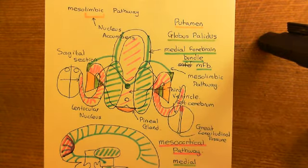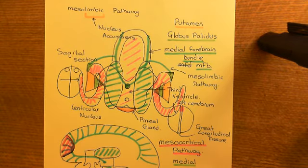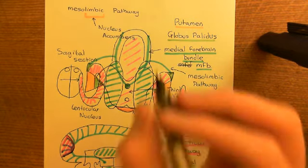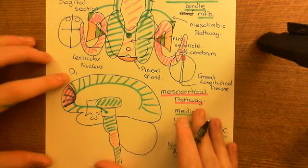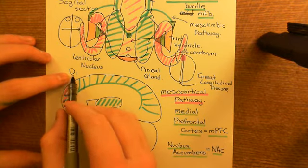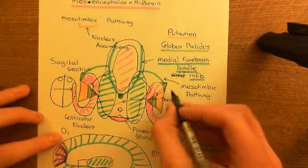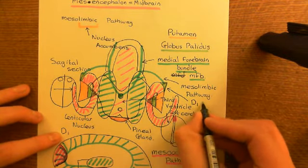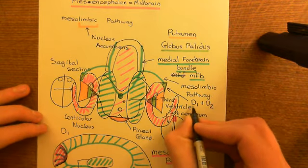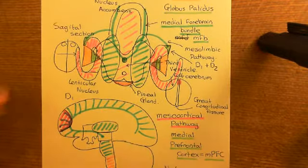The one final thing before we end this video and begin the full reward system theory in the next video: in the cortex, the main receptor for dopamine on neurons is D1 receptors. Whereas in the nucleus accumbens — this important limbic system structure — you have both D1 receptors and also D2 receptors. Those are the main types of dopamine receptors used on neurons in the cortex and the nucleus accumbens.